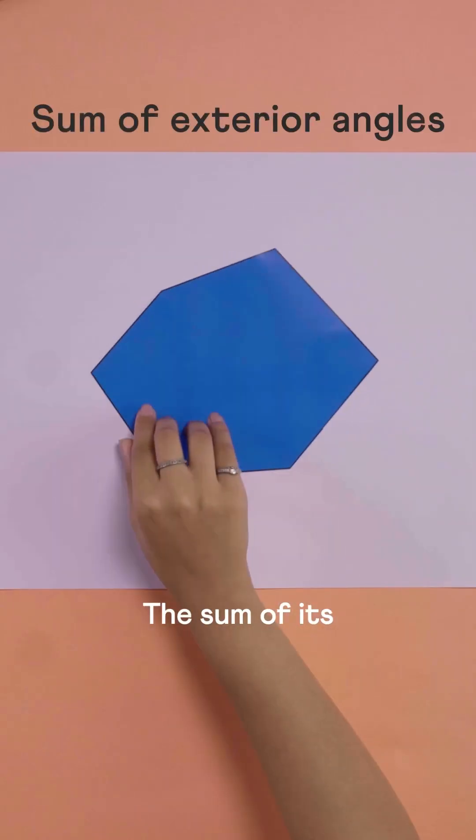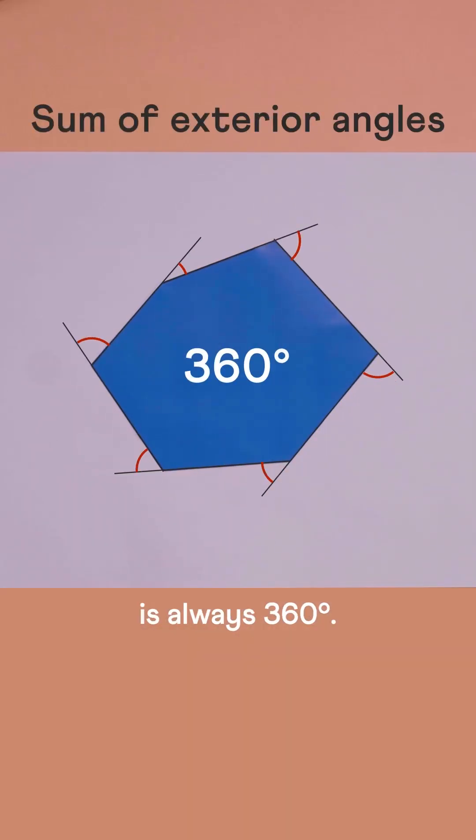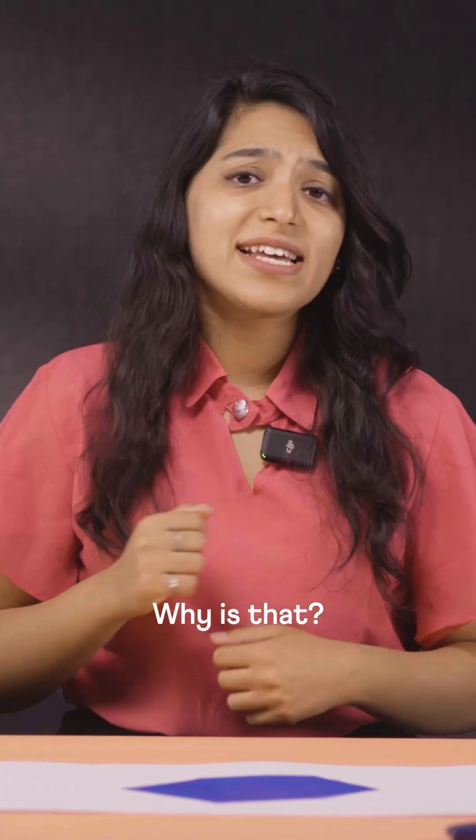Take any polygon. The sum of its exterior angles is always 360 degrees. Why is that?